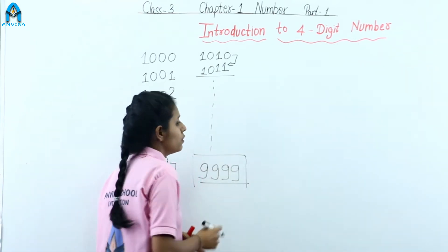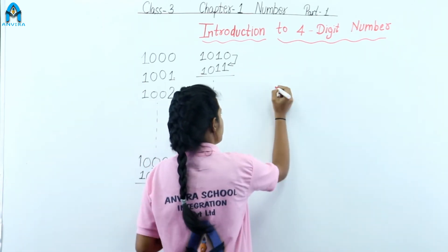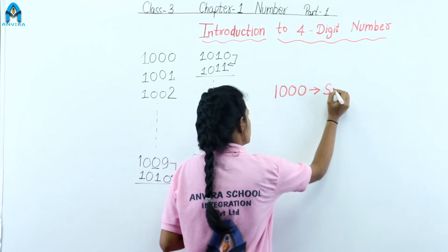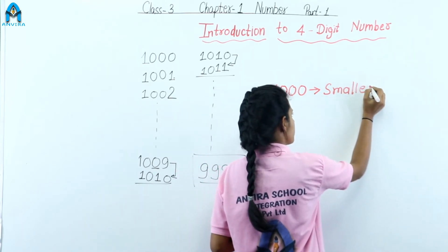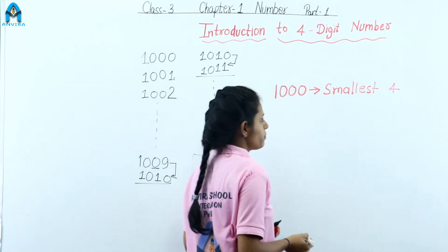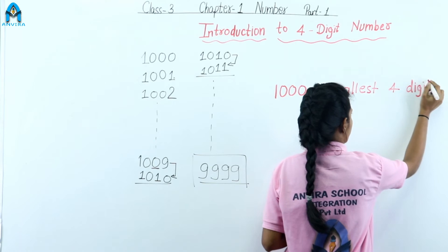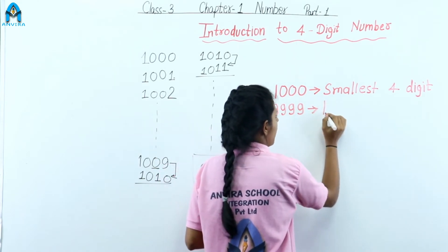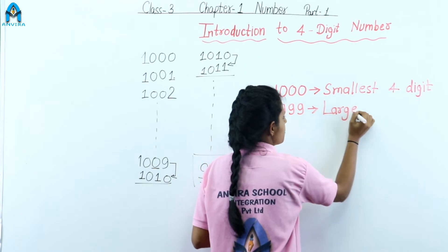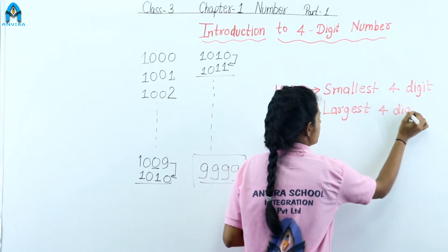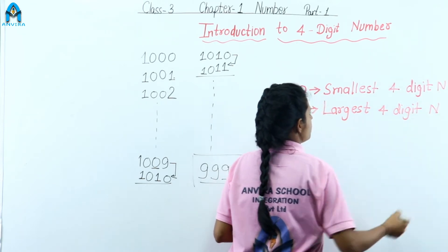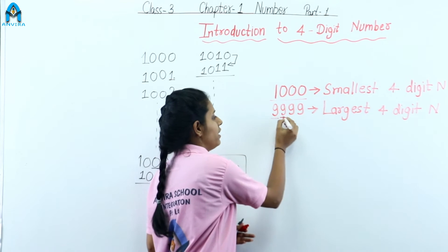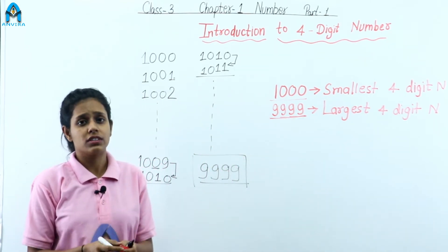So 1000 is the smallest 4-digit number and 9999 is the largest 4-digit number. The smallest 4-digit number is 1000 and the largest 4-digit number is 9999.